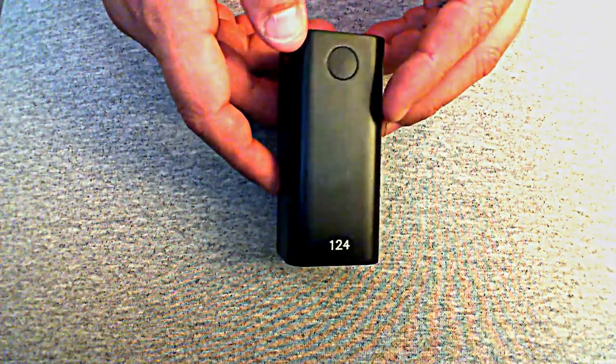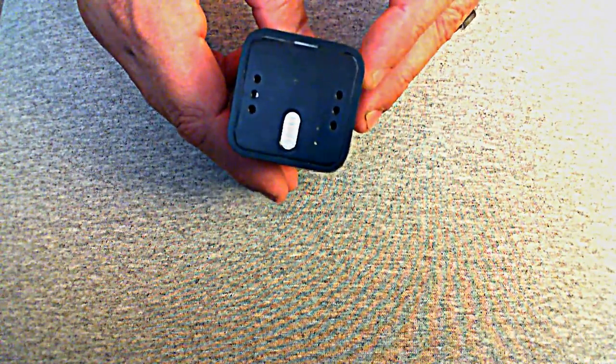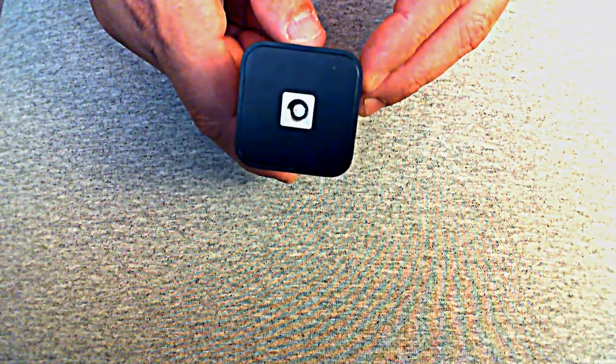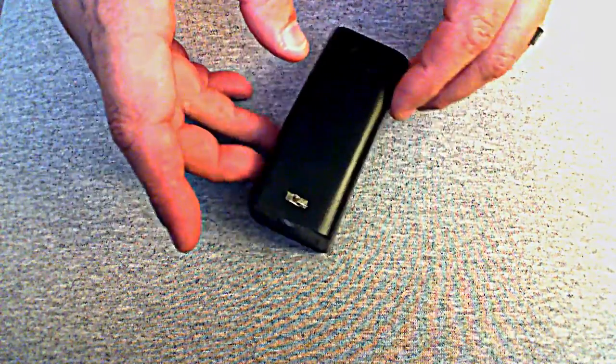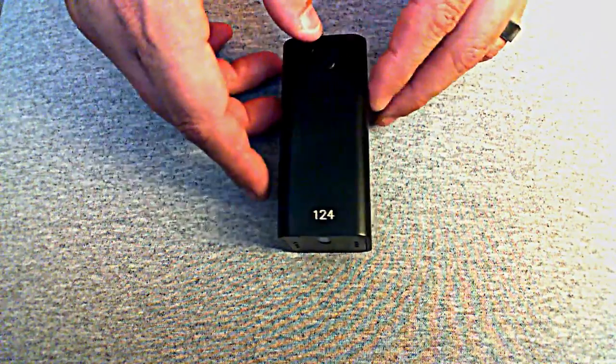Nothing on that side. There's our fire switch and the serial number, number 124. And then nothing on that side. Logo again. We have our bottom and our top. So let's kind of go through this thing and kind of show you some of the things.